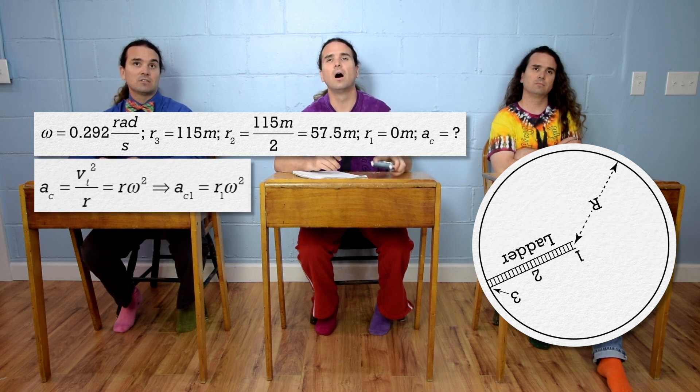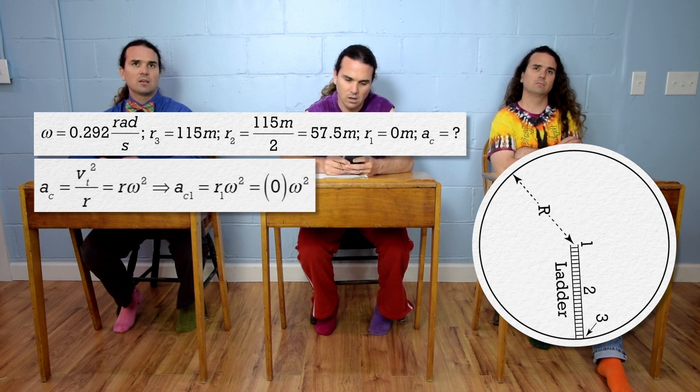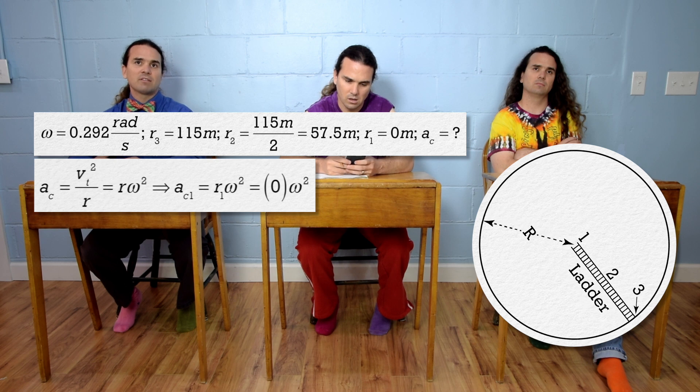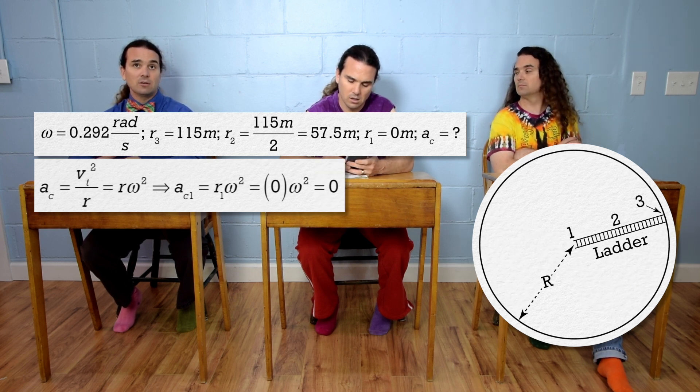For part 1, that means the centripetal acceleration equals 0 times, well, it doesn't matter what the angular velocity is, the centripetal acceleration then at the top of the ladder equals 0.